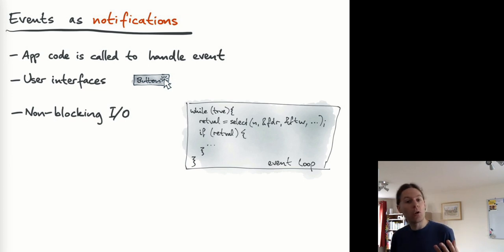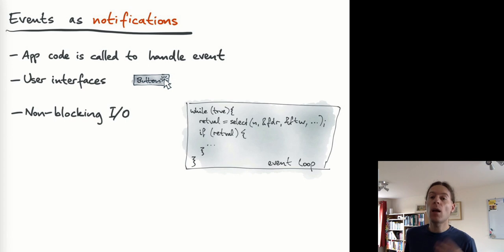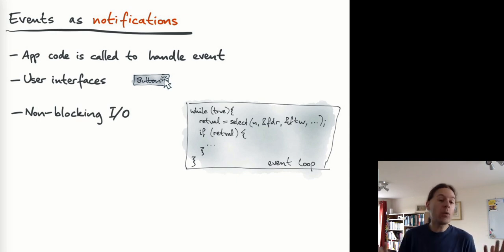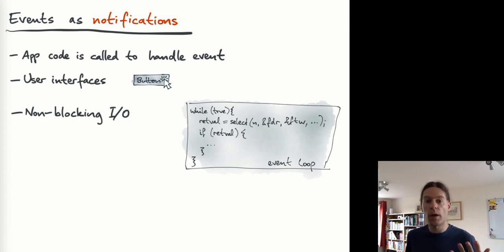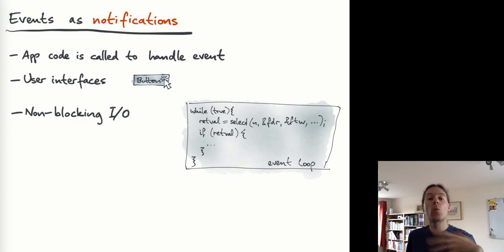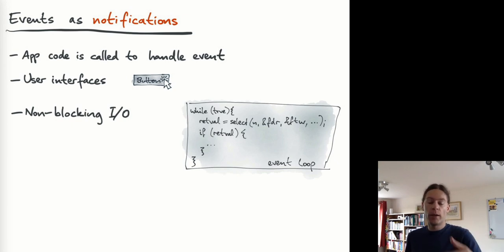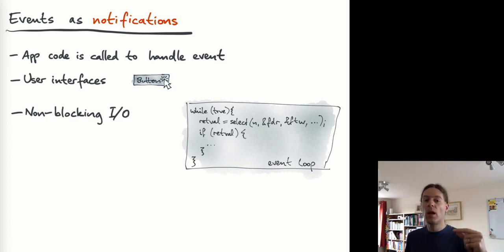We also get events in different contexts. For example, we get event loops in an I/O context where you want to read and write from several files or several network sockets. You can have a non-blocking interface that allows you to wait on a bunch of file descriptors at the same time, and whenever any of those file descriptors has some data available to read, or has managed to write data to a buffer, then you get an event. Then once you've handled that, you go back around the loop — that's an event loop.